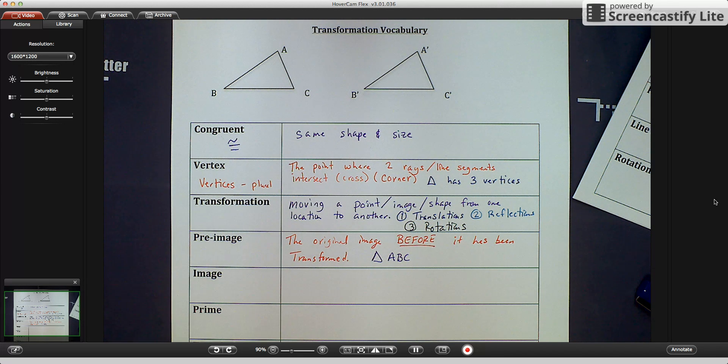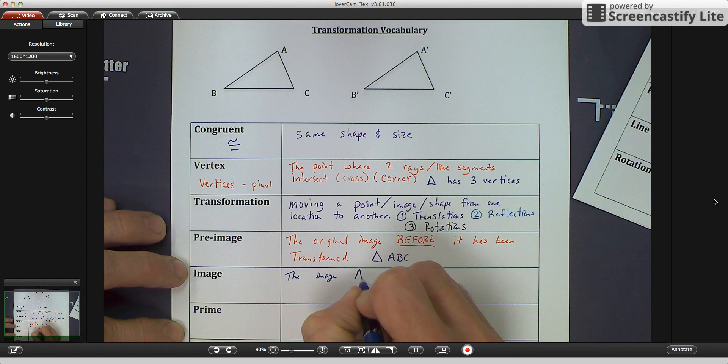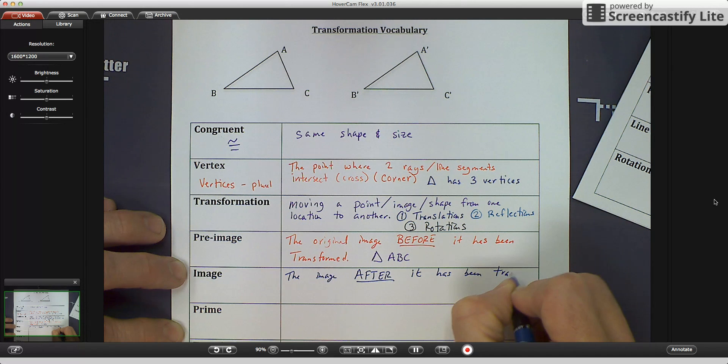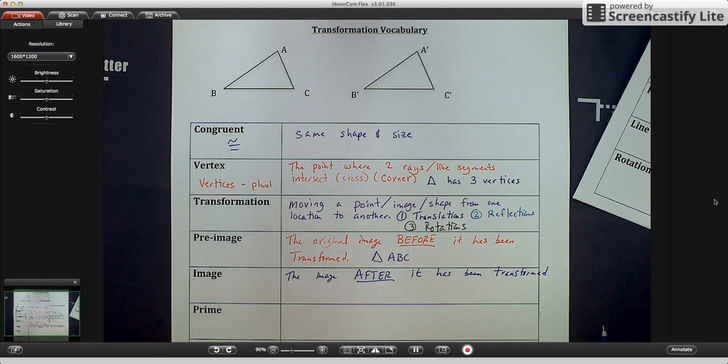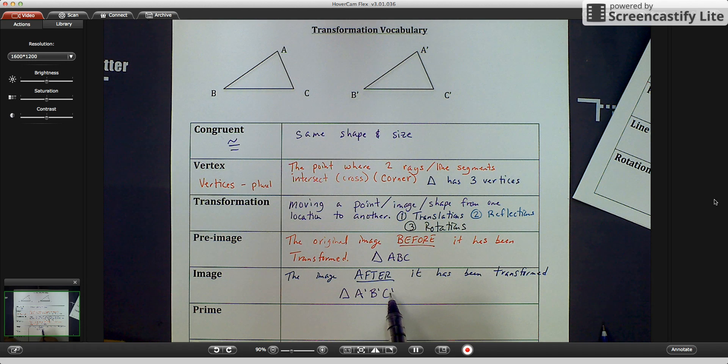The image is the image after it has been transformed. Sorry, I ran out a little bit of space there. The image up top is triangle A, B, and those little marks right there, you have to write the marks in. They look like apostrophes. We're going to get to those right now.